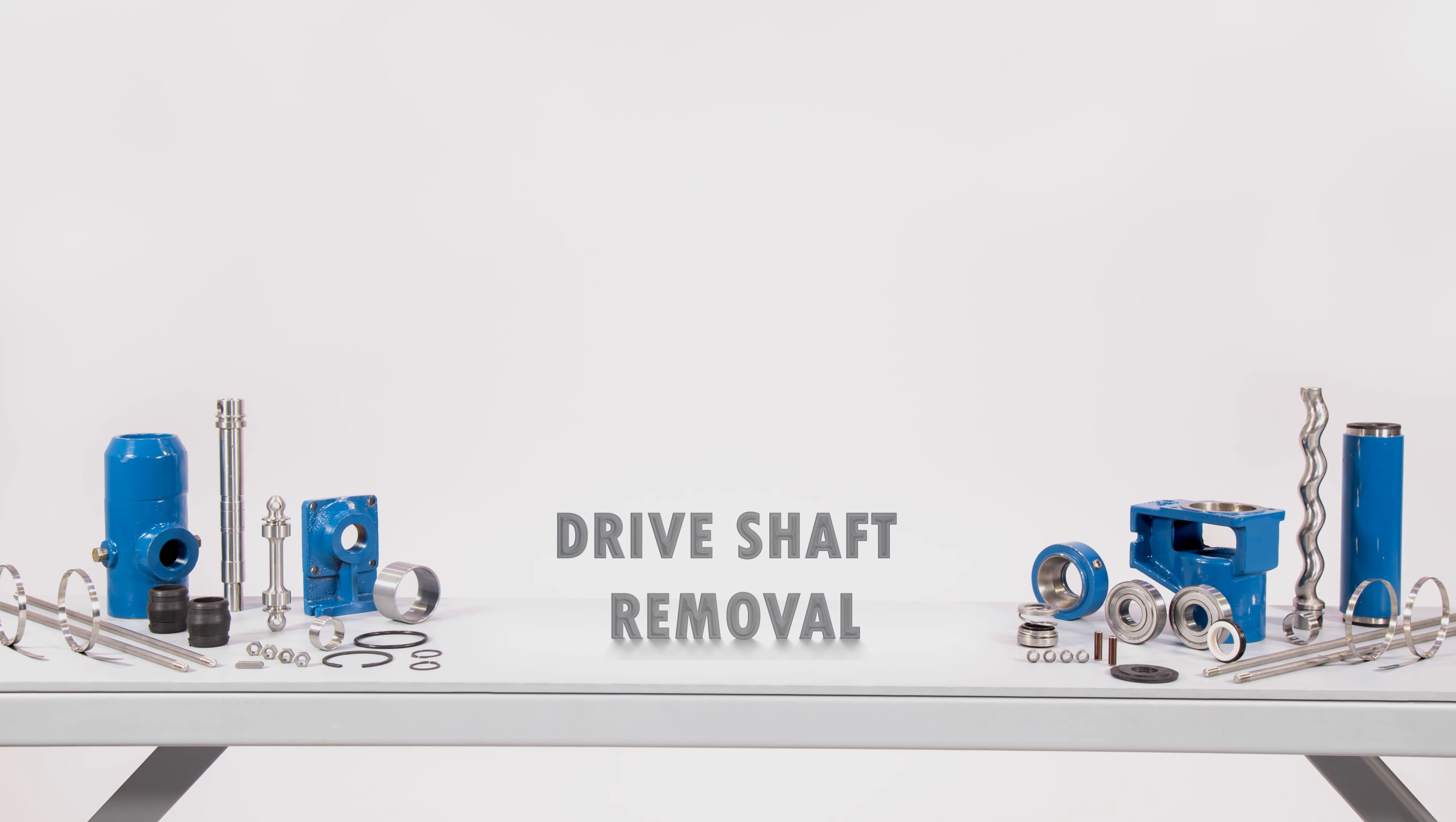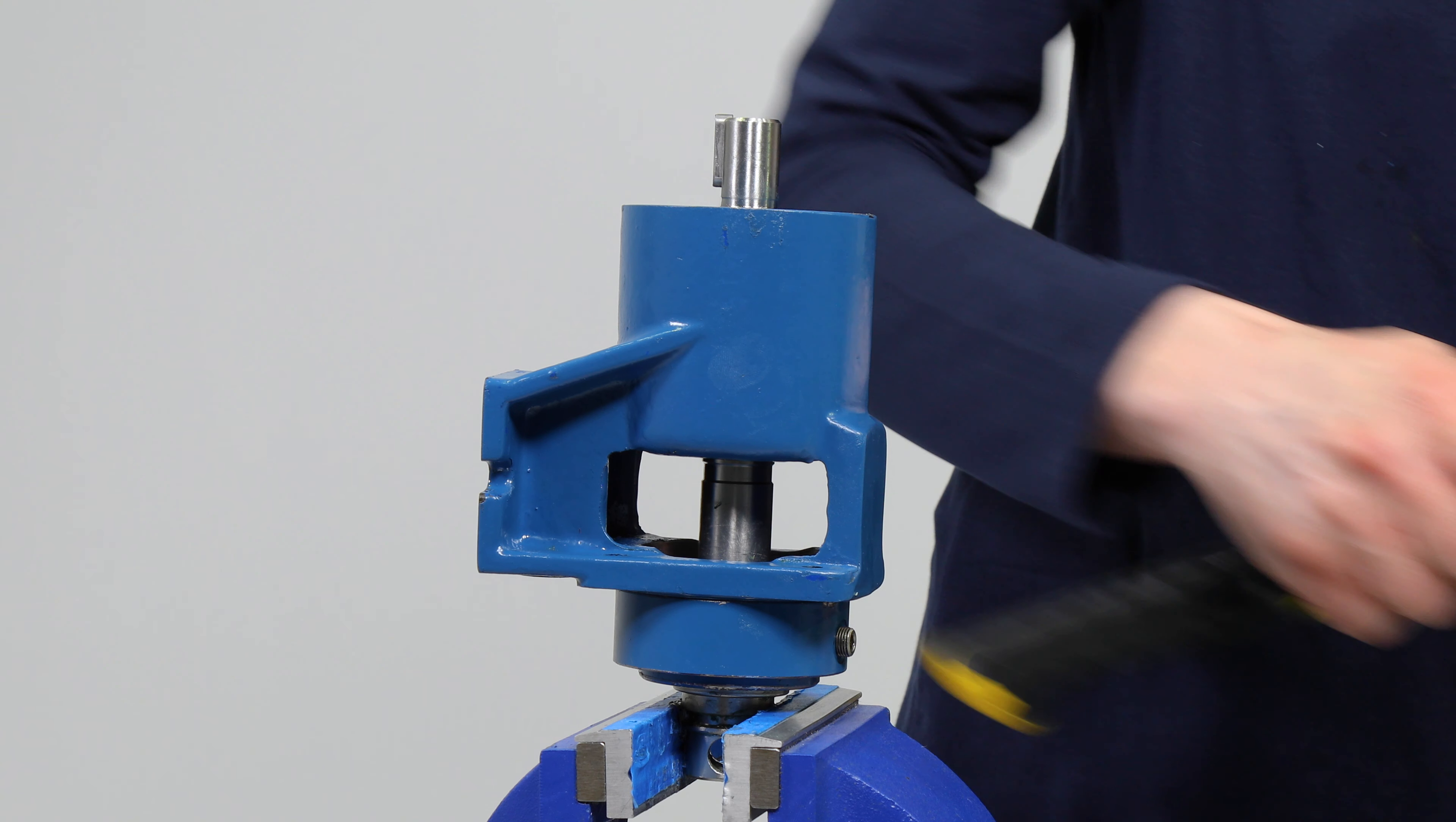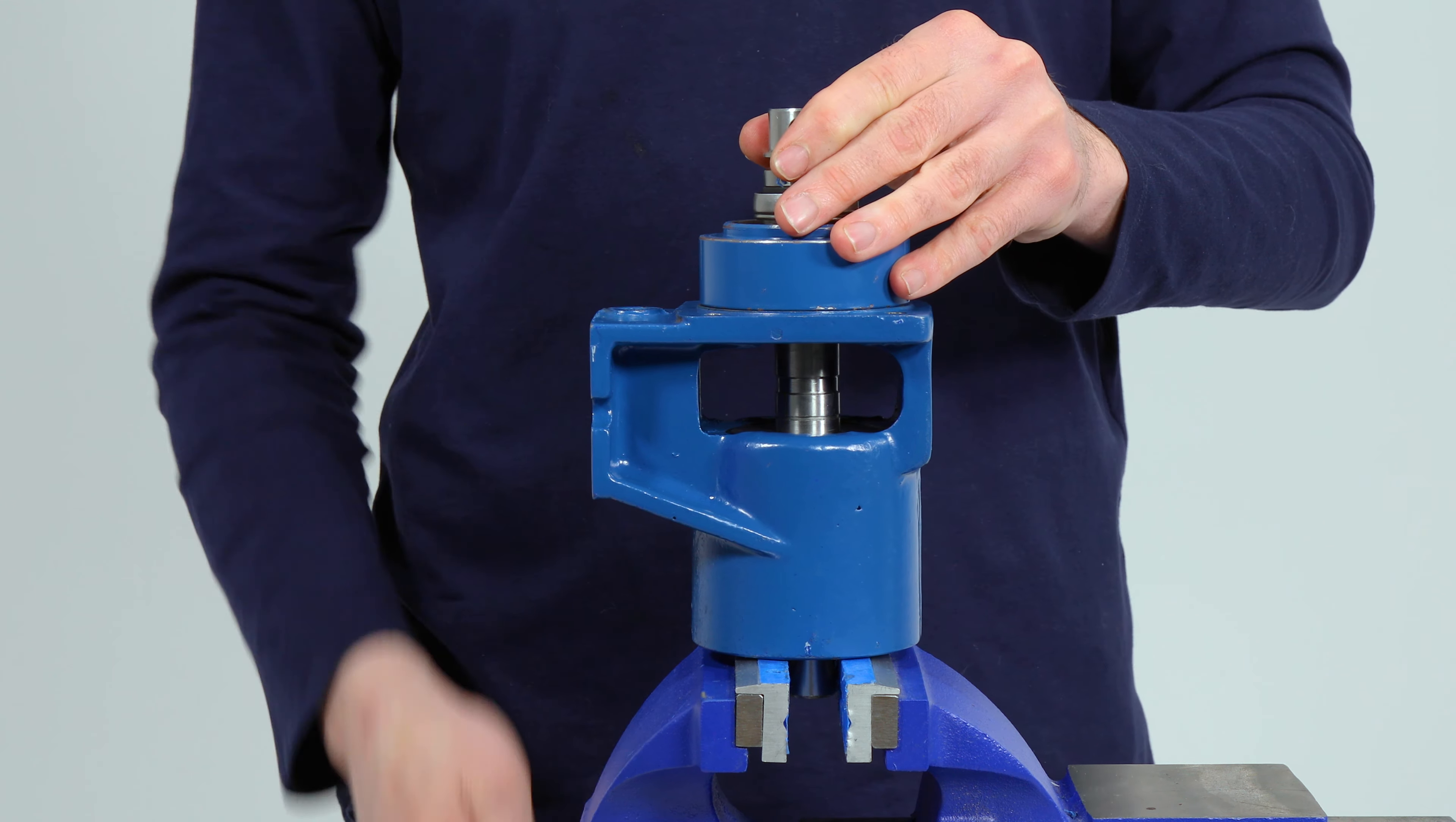Drive shaft removal. Flip the bearing housing vertically in the vise and secure at the drive shaft head. Remove the key from the keyway using a hammer and punch. Once again, flip the bearing housing vertically and secure at the keyway.